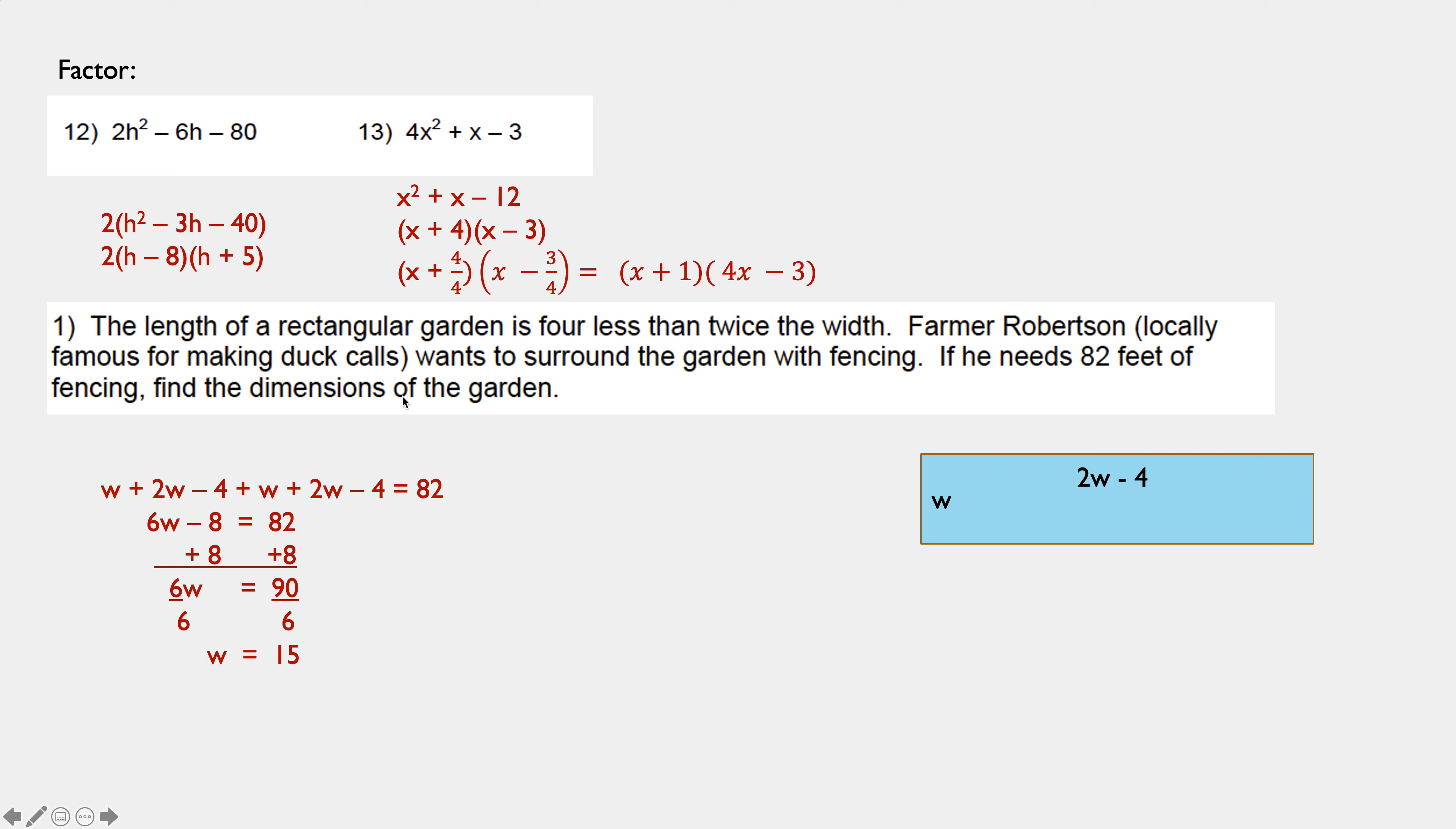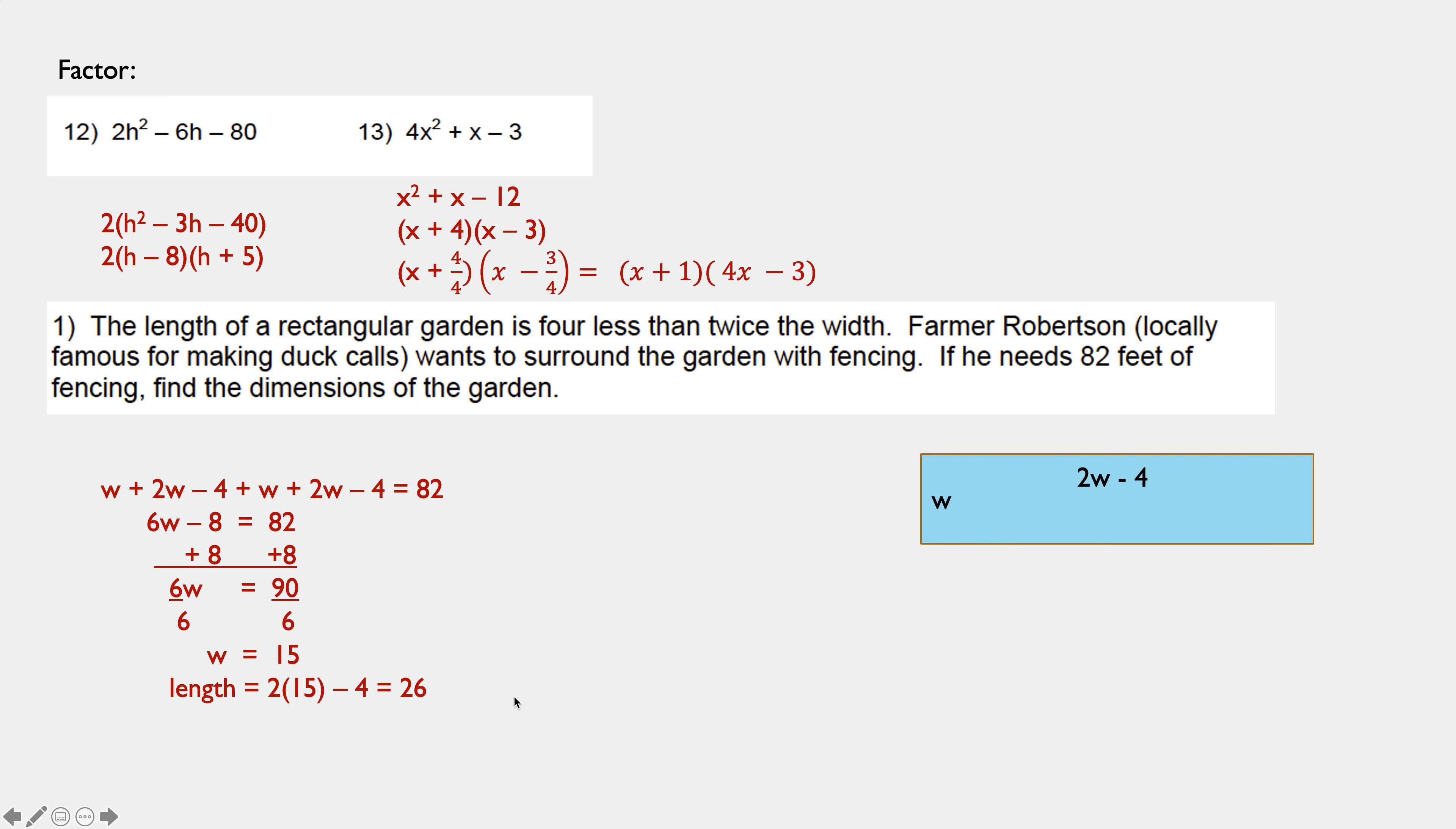The directions say to find the dimensions of the garden. Oh, what are they looking for? So, I'm not quite done yet. The length is going to be 2 times 15 minus 4, which is 26. So, I am now complete with width and length.